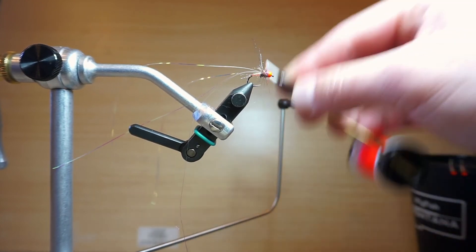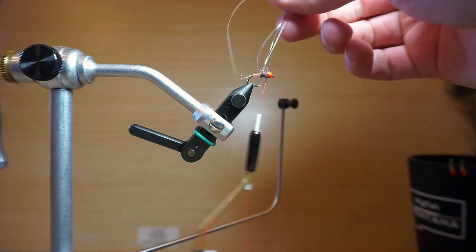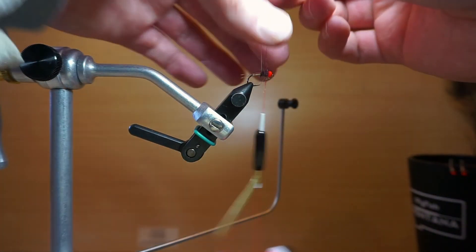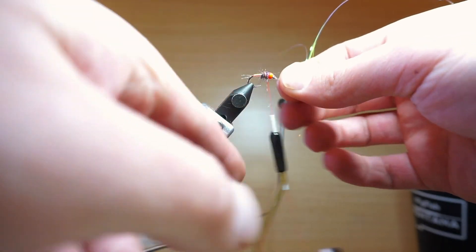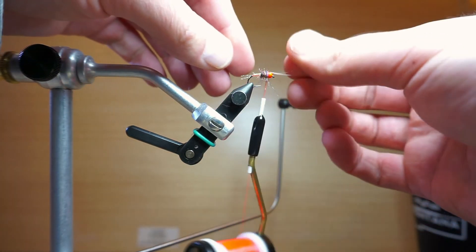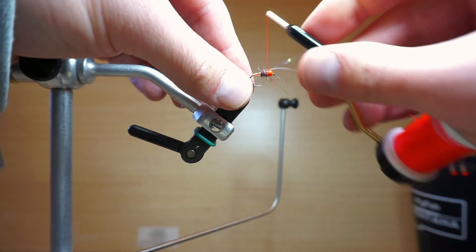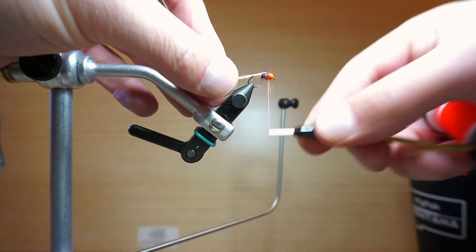So then you're going to go ahead and take that flashabu and you're going to pull it back over the top and attach it up by the bead. This is a step that you could leave out if you wanted to. Just do the rainbow scud dub and leave it at that and not pull the flashabu back over. Kind of up to you.